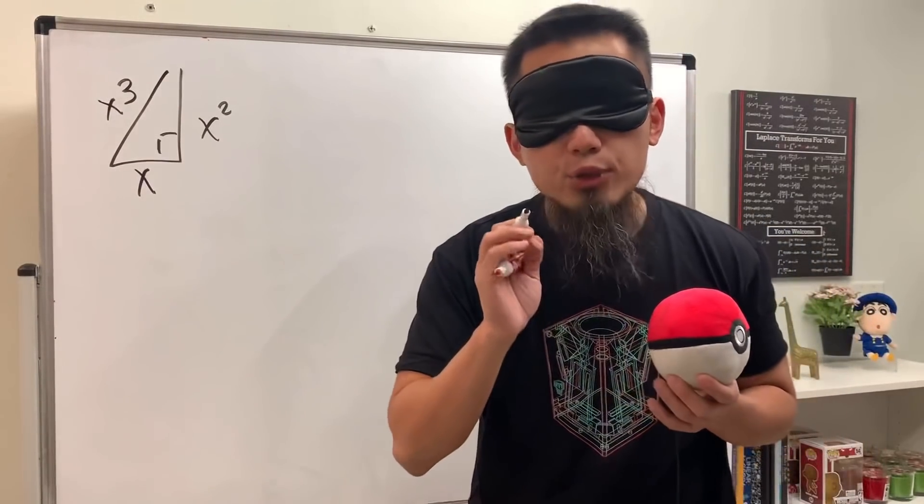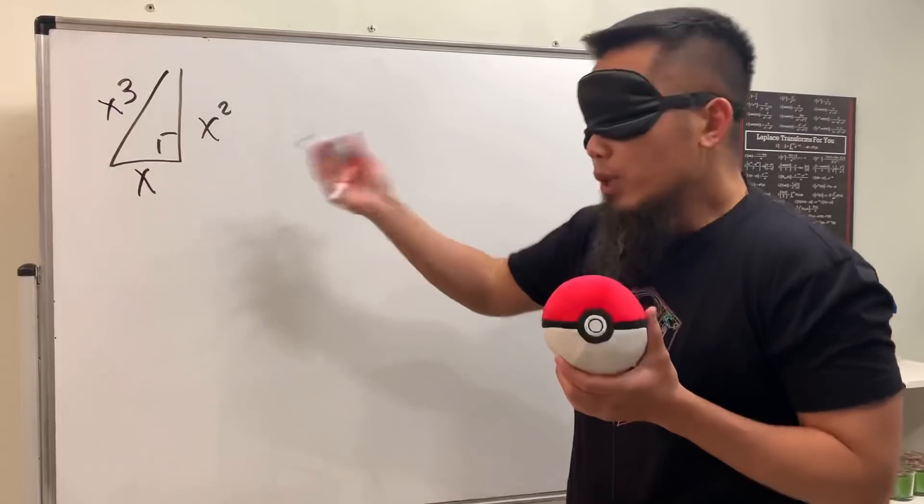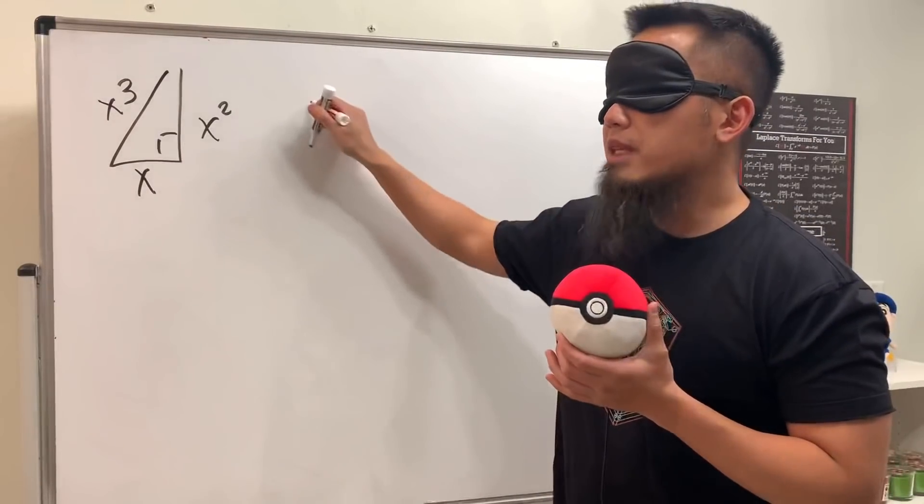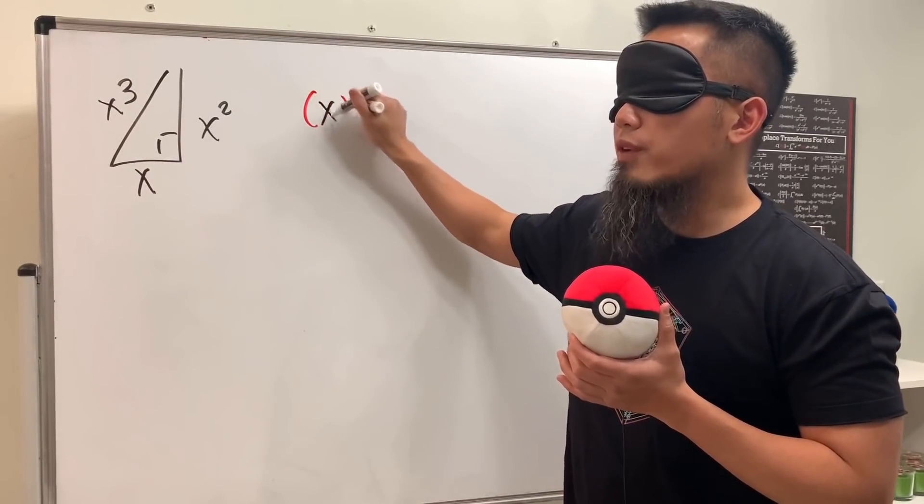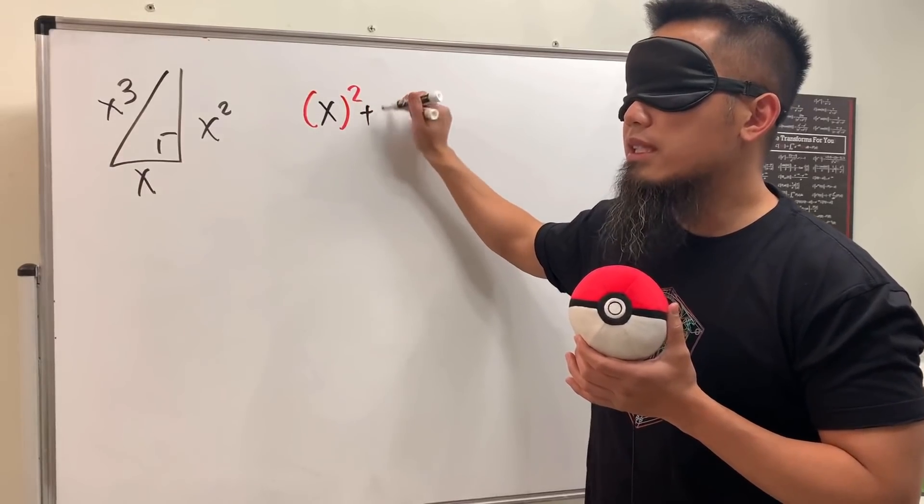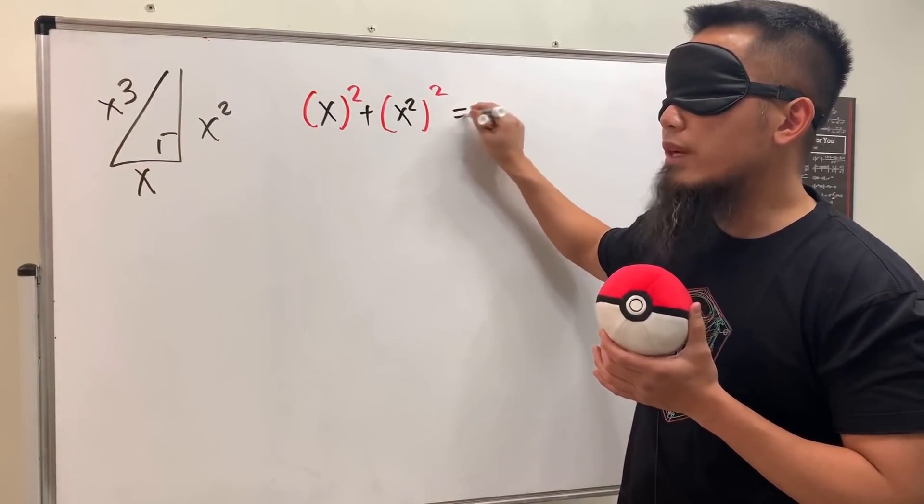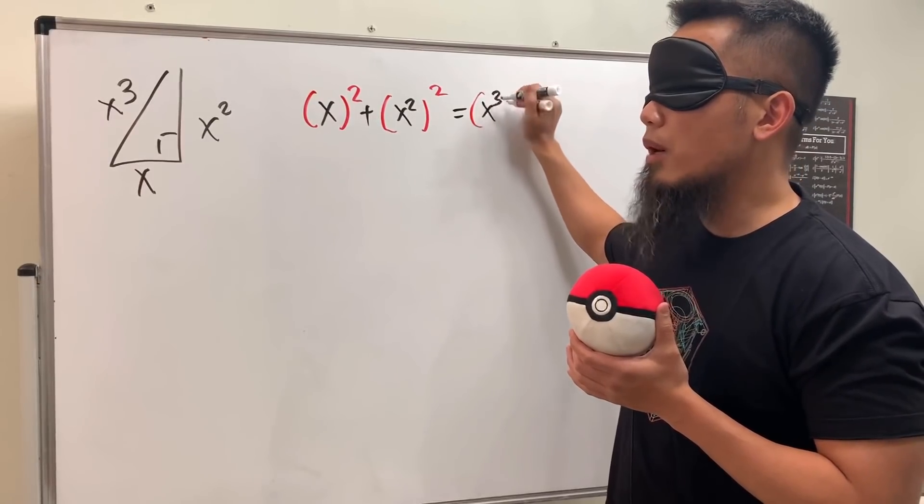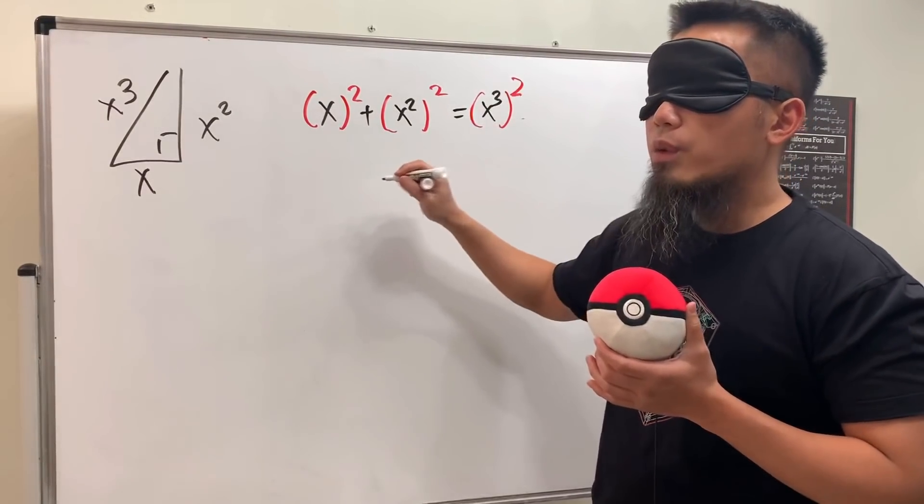And to solve x right here, assuming we're actually going to get a triangle, we can just use the Pythagorean theorem. Namely we get x squared plus x squared squared, and then we just have to square the third side which is x to the third power, like so.